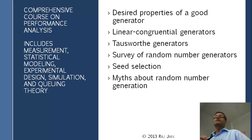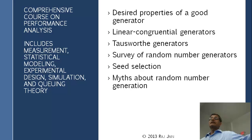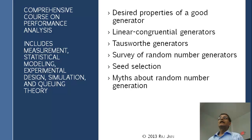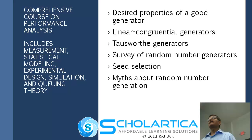Yesterday, somebody was talking about how to improve, how to make that analysis faster, with another faculty member from some other department. Somebody mentioned that somebody made their simulation and analysis 10 times faster — not by going to parallel processing, but just by looking at the random number generation. Because for every iteration you're doing, you're probably using hundreds of random numbers. You're calling this little routine many, many times.